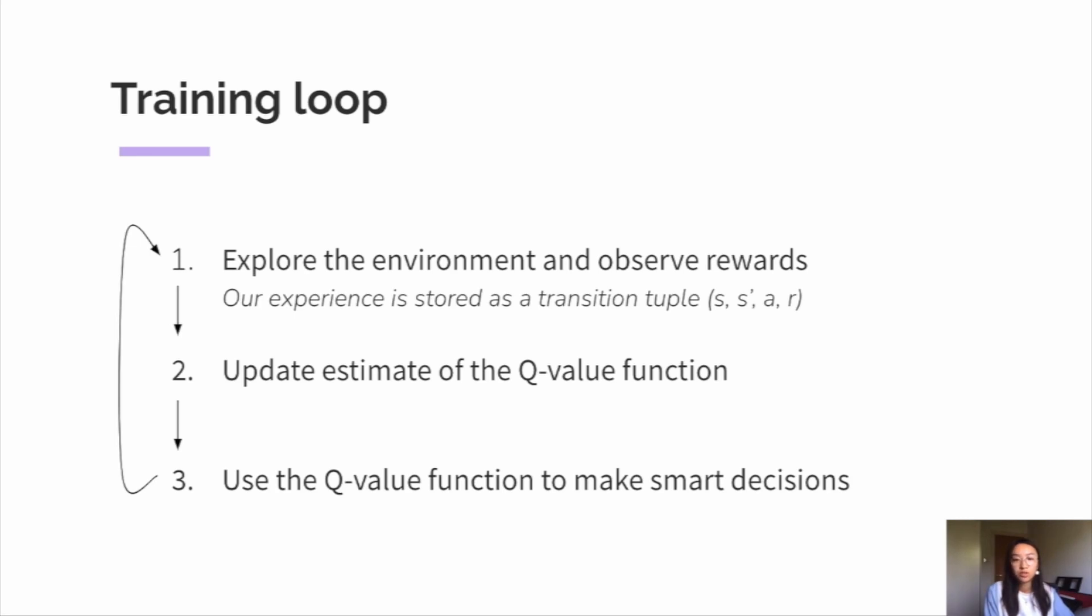In deep reinforcement learning, we utilize an artificial neural network to approximate our Q-value function. And the method we develop in our project is a form of deep reinforcement learning as we wanted to cater to larger real-life problems where having a continuous state or action space is very common.